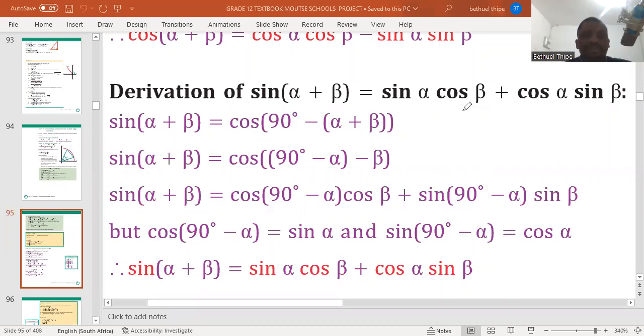Welcome back folks. So now we are required to derive sine of alpha plus beta to make sure that this all is equal to sine alpha cos beta plus cos alpha sine beta.